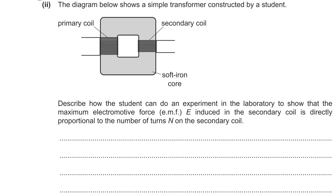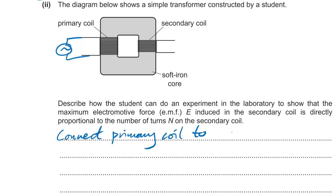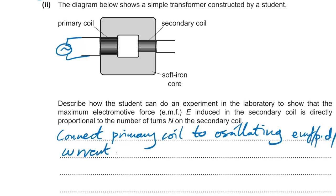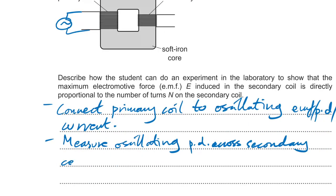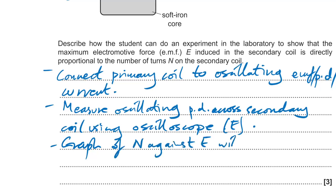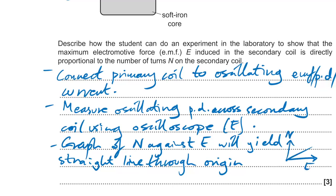Transformer experiment: connect the primary coil to an alternating supply. Measure the alternating PD across the secondary coil using an oscilloscope. Vary the number of turns on the secondary coil and record the EMF. A graph of N against E yielding a straight line through the origin confirms direct proportionality.